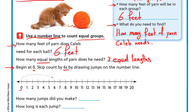The first jump is six. The second jump, six more — we'll go to 12. The third jump, another six — we'll go to 18. So how many jumps did you make? I made three jumps. Why? Because there are three lengths or three balls. So this is the first ball, the second ball, the third ball. For the three balls, you will need 18 feet.